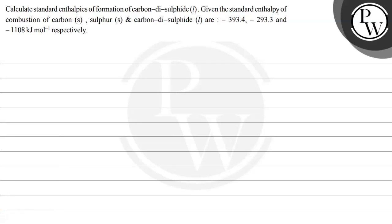Hello Bachcho, let's read this question. The question says: calculate the standard enthalpies of formation of carbon disulfide liquid, given the standard enthalpy of combustion of carbon solid, sulfur solid, and carbon disulfide liquid are minus 393.4, minus 293.3, and minus 1108 kilojoule per mole respectively. So here we have to find out the standard enthalpy of formation.